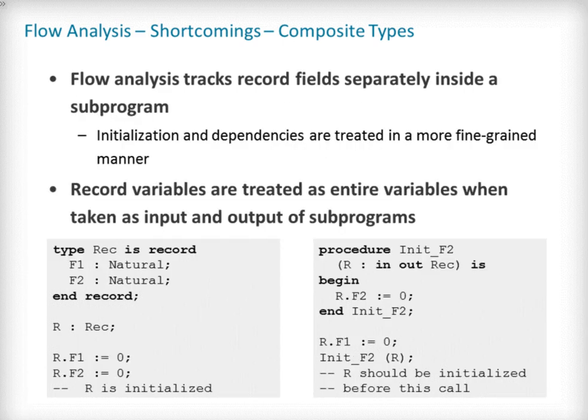Flow analysis is more precise on record objects, in the sense that it tracks separately the value of each component inside a single sub-program. When a record object is initialized by successive assignments of its components, flow analysis can make sure that the whole object is initialized. Note that record objects are still treated as entire objects when taken as inputs or outputs to sub-programs. For example, using a procedure call to initialize only some of the components of a record object will result in flow analysis complaining about non-initialization of to-be-initialized components on entry of the sub-program, as demonstrated in the init_F2 sub-program shown on this slide.